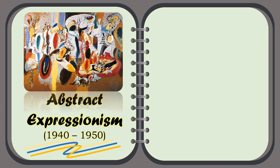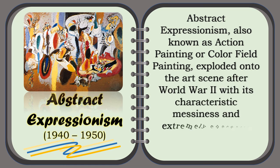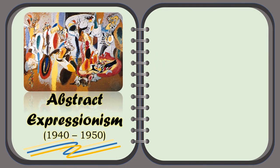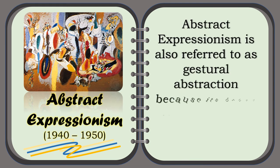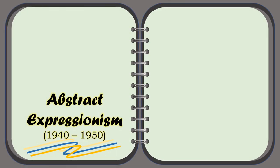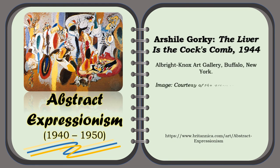The Abstract Expressionism, also known as action painting or color field painting, exploded onto the art scene after World War II, with its characteristic messiness and extremely energetic applications of paint. Abstract Expressionism is also referred to as gestural abstraction because its brush strokes reveal the artist's process. For example, The Liver is the Cock's Comb, oil on canvas by Arshile Gorky, 1944, in the Albright-Knox Art Gallery, Buffalo, New York.